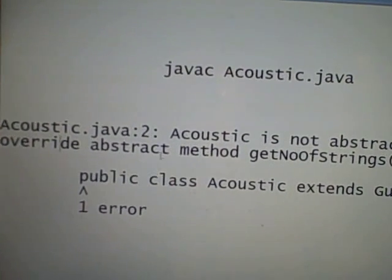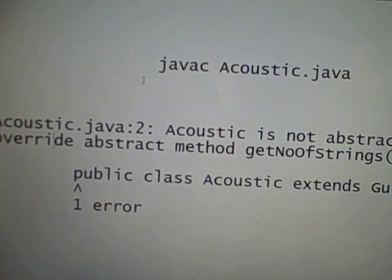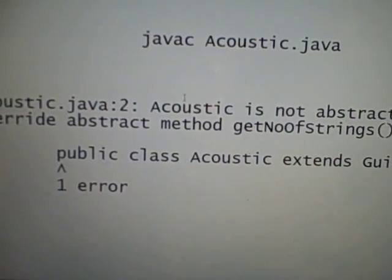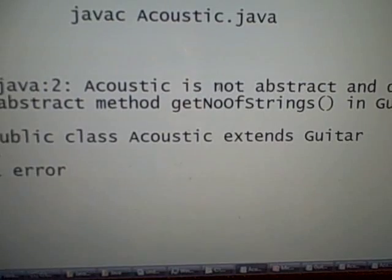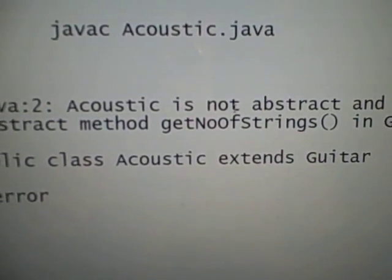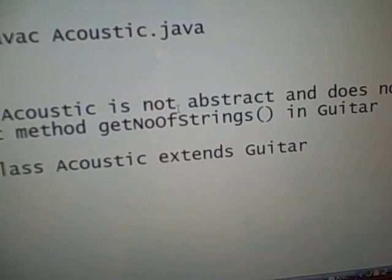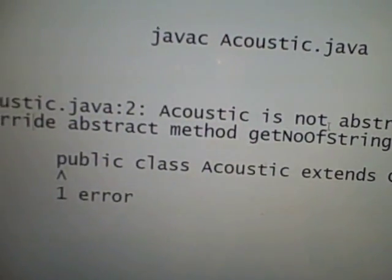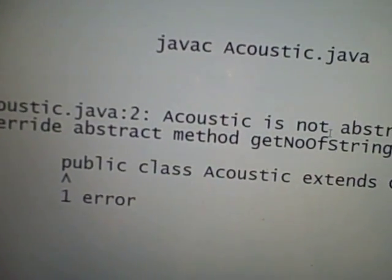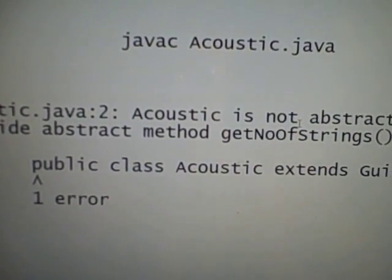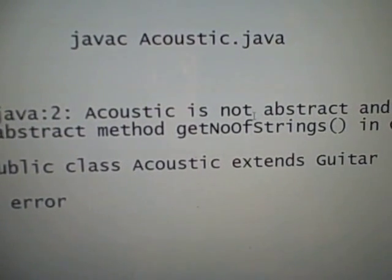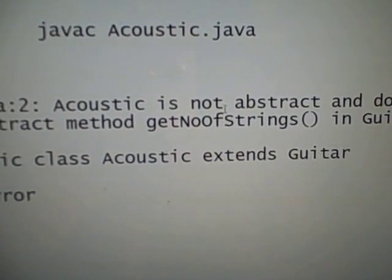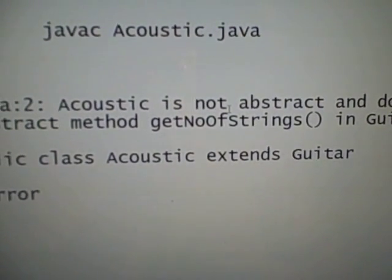Here I am compiling my subclass. Then this is the error: Acoustic is not abstract and does not override abstract method get number of strings in Guitar. Class Acoustic extends Guitar.